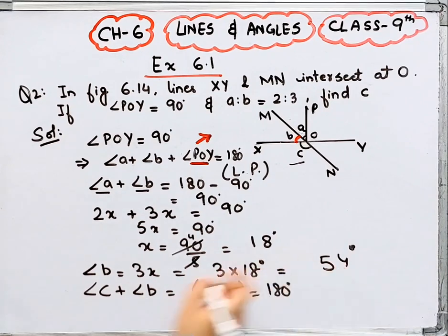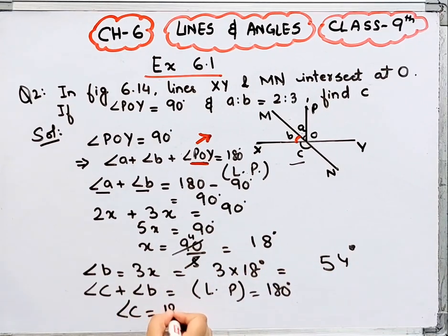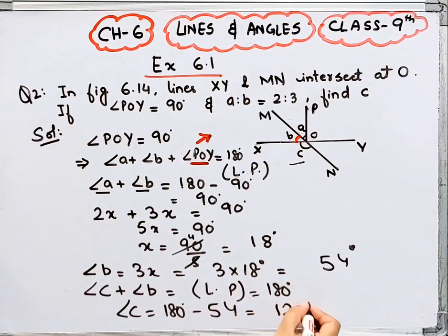Here I know B, so I know 54 is angle C, 180 minus 54. How much is it? 126 degrees.